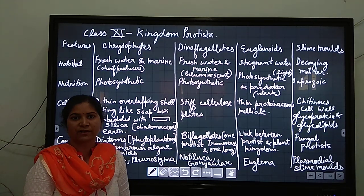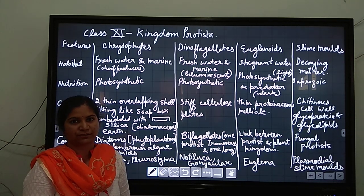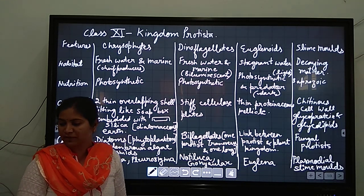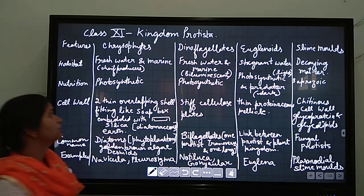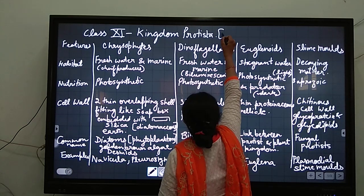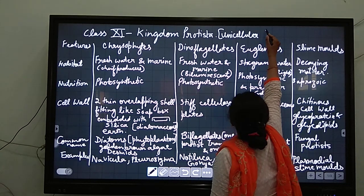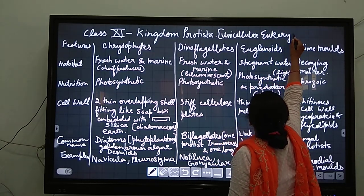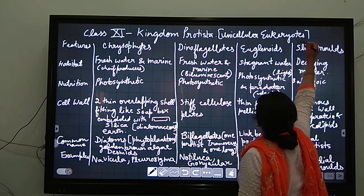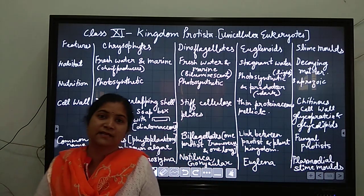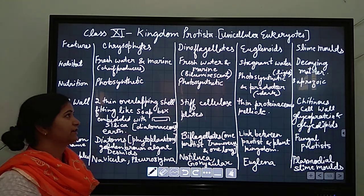Basic features: they are unicellular eukaryotes. This is a special feature - they have a single nucleus inside them, they are single cell, and they are eukaryotes.